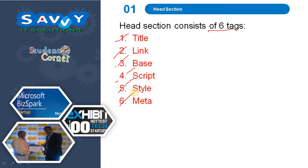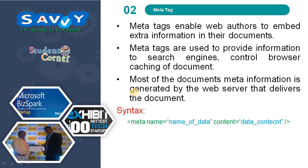Now we are moving to the meta tag section. The meta tag enables web authors to embed extra information in their documents. Meta tags are used to provide information to search engines, control browser caching of the document. Most of the document's meta information is generated by the web server that delivers the document.